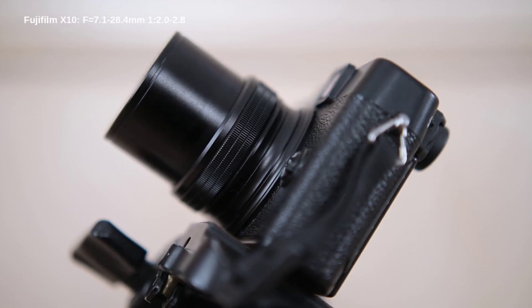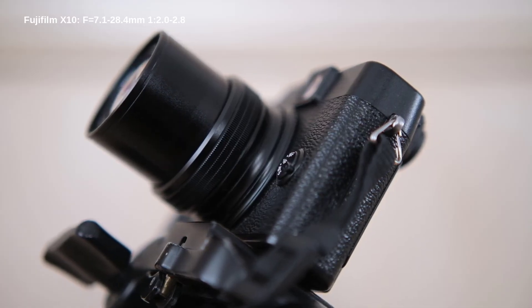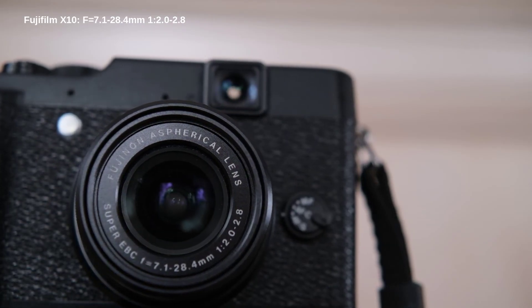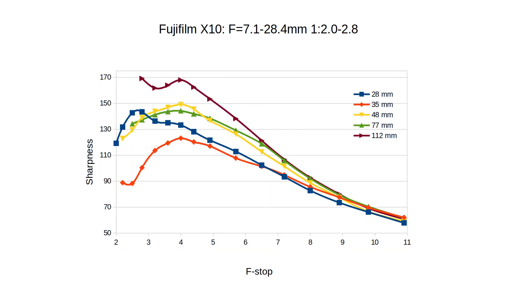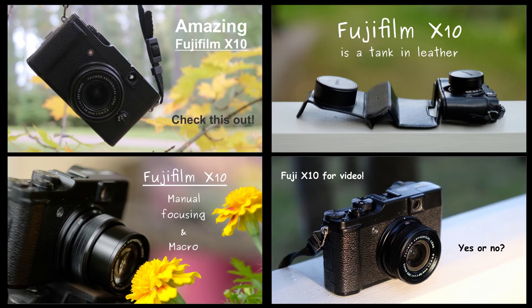I've used my Fuji X10 for many years. Its non-interchangeable lens is fantastic and I appreciate all of its f-stops. This lens performs well wide open and offers excellent characteristics. In general, it performs superbly wide open and gradually loses sharpness as it's stopped down. I've analyzed this unique lens in depth in other videos, all of which are linked below.